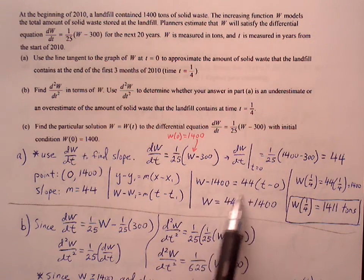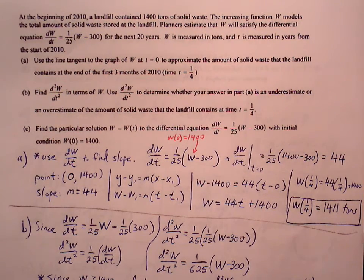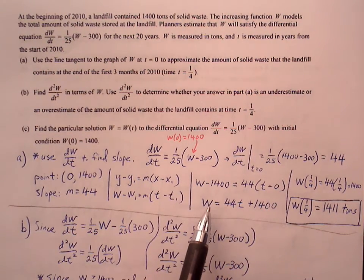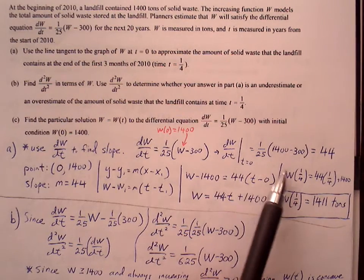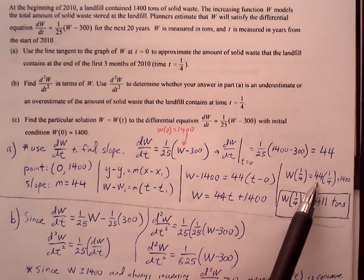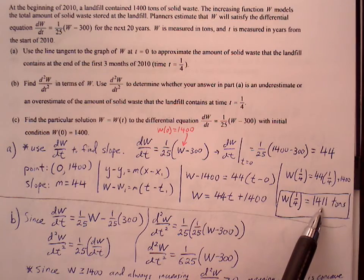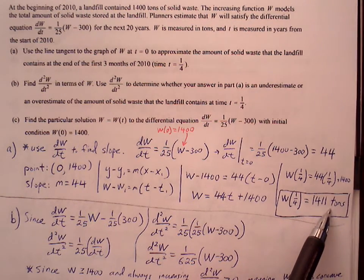And then we can just solve for W. 44t plus 1400. This is the equation that will help us approximate the amount of waste at every point of the year. So at one fourth of the year, which is three months in, we can approximate there to be 44 times one fourth plus 1400, so 1411 tons of waste at three months in.